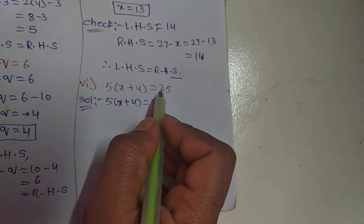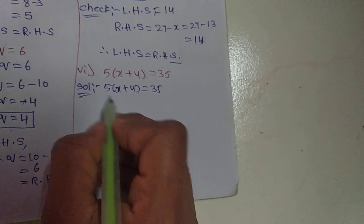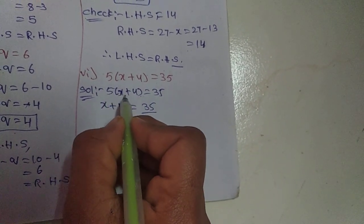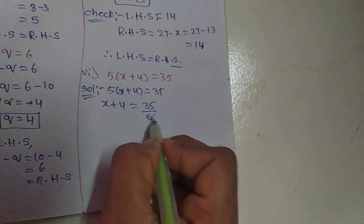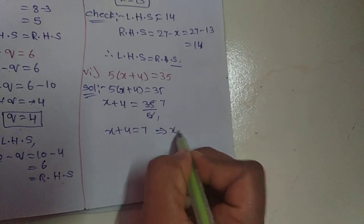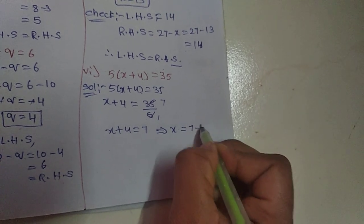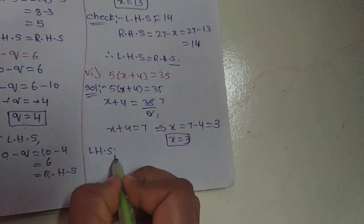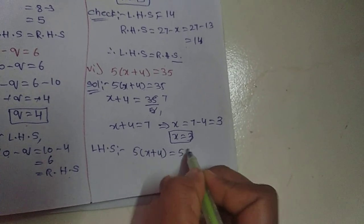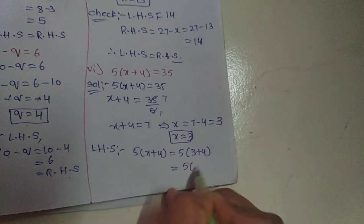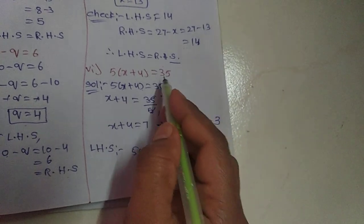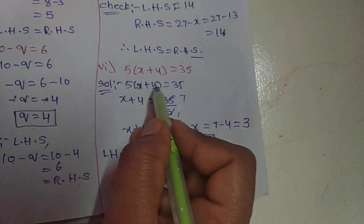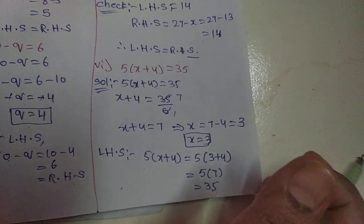Sixth one: 5 into (x plus 4) equals 35. First transpose the 5 to the right side as division: x plus 4 equals 35 by 5. 5 sevens are 35, so x plus 4 equals 7. Transpose plus 4 to the right as minus 4: x equals 7 minus 4, so x equals 3. Checking: 5 into (3 plus 4) equals 5 into 7, which is 35. So LHS equals RHS.